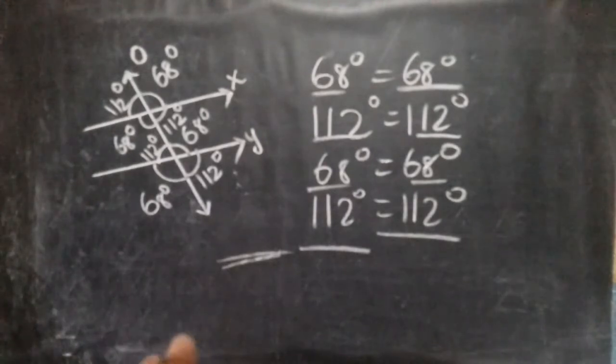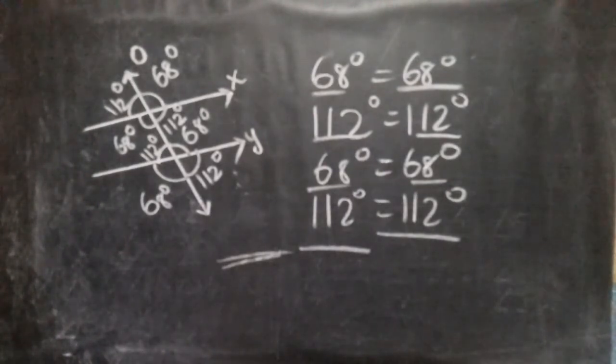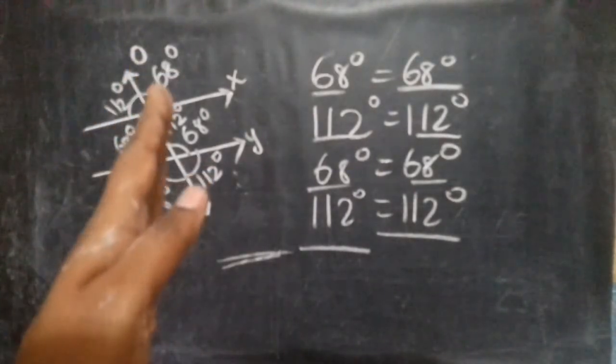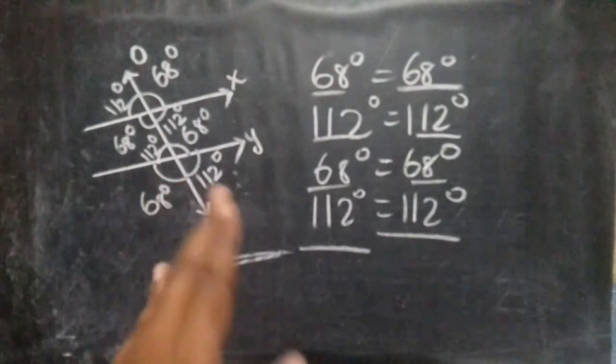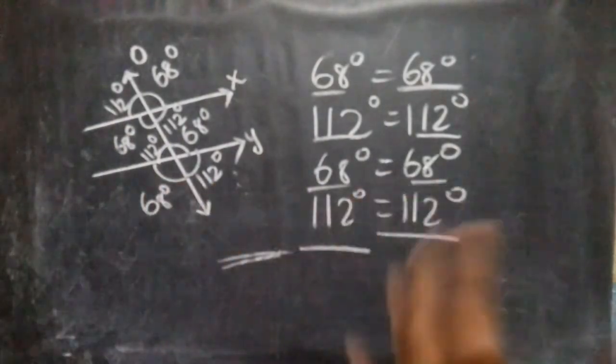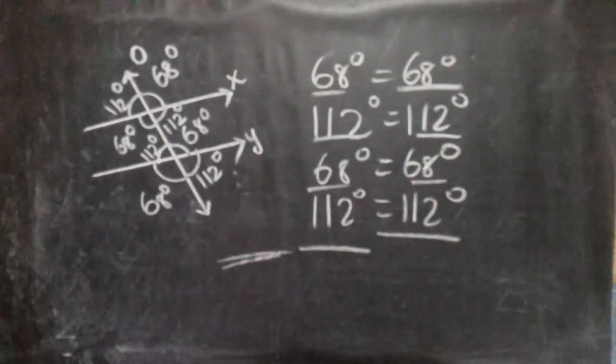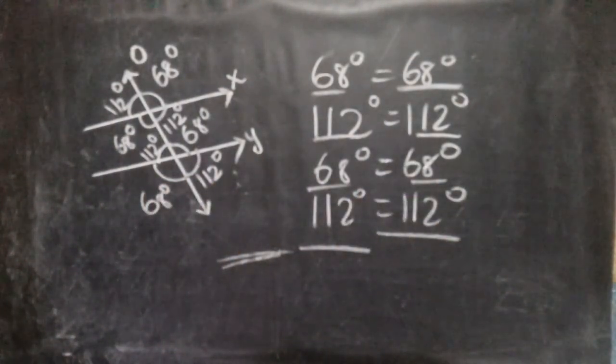If you find out non-parallel lines, the corresponding angles do not relate to each other. Note that each corresponding pair has one interior and one exterior angle. Thank you for watching this video.